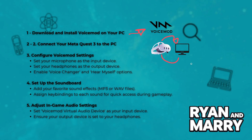Step 3: Configure Voicemod settings. Open Voicemod on your PC and go to the settings. Set your microphone as the input device, set your headphones as the output device, and enable the voice changer and 'hear myself' options.